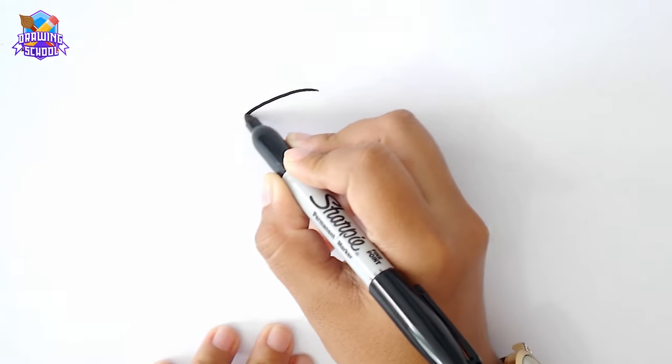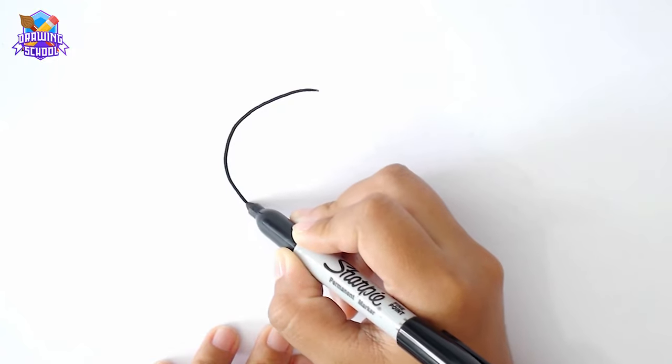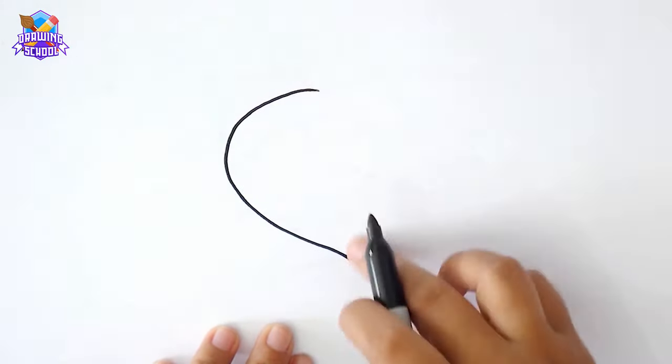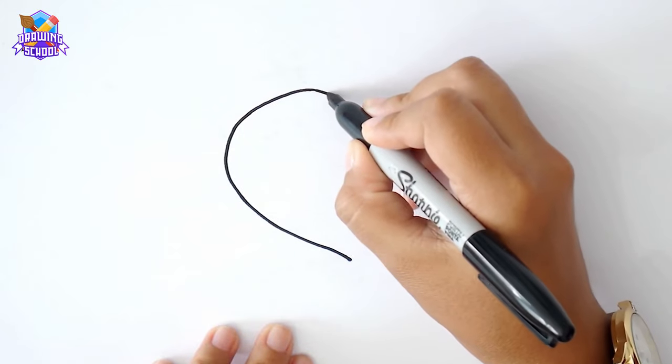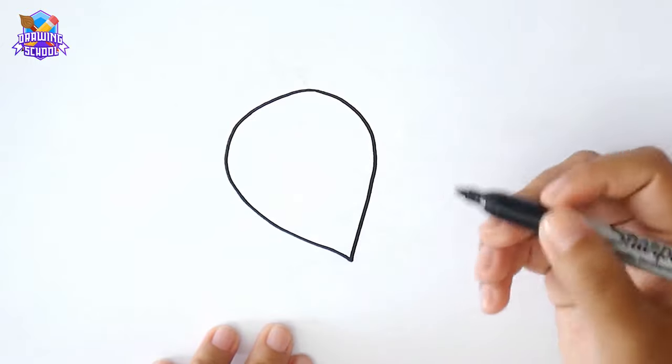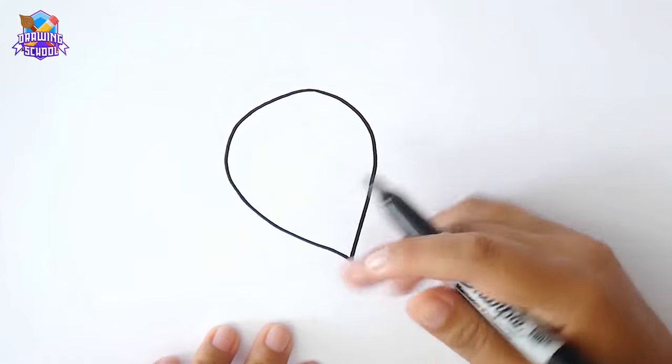First, we're going to draw an inverted raindrop right in the middle. Then we're going to draw a little circle on the tip.